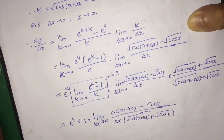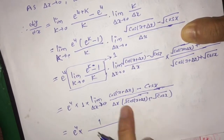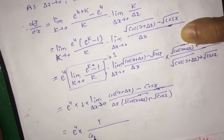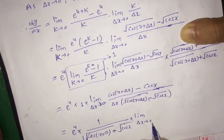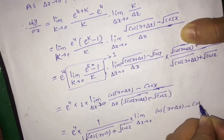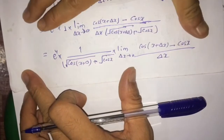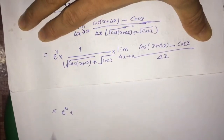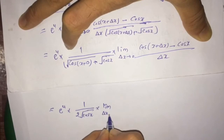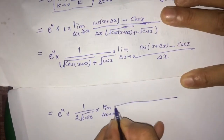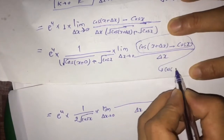Applying (a - b)(a + b) = a² - b², and noting that the standard limit result limit k tends to 0 of (exponential(k) - 1)/k equals 1, we use this and are left with exponential(u) times 1, times limit δx tends to 0 of cos(x + δx) minus cos x, whole divided by δx times root under cos(x + δx) plus root under cos x.